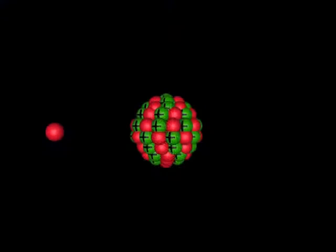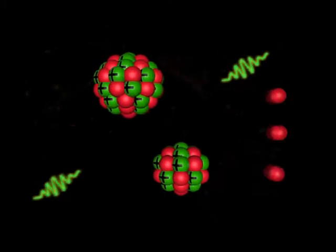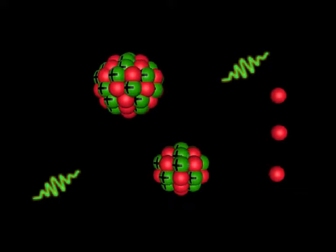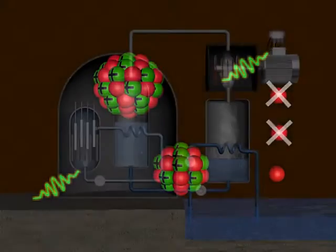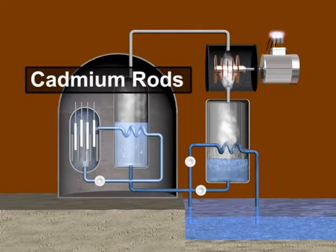To achieve a controlled chain reaction, arrangement is made for the partial absorption of neutrons available during each U-235 fission. The neutrons are absorbed by using cadmium rods, which act as control rods.